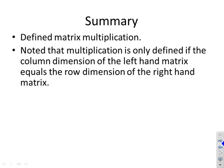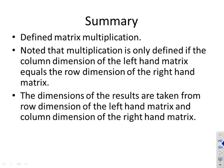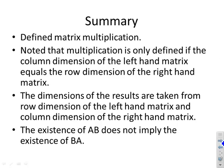In summary: we defined matrix multiplication and noted that it is only defined if the column dimension of the left-hand matrix equals the row dimension of the right-hand matrix. The dimensions of the result are taken from the row dimension of the left-hand matrix and the column dimension of the right-hand matrix. Finally, the existence of A×B does not imply the existence of B×A, because the two are totally different.